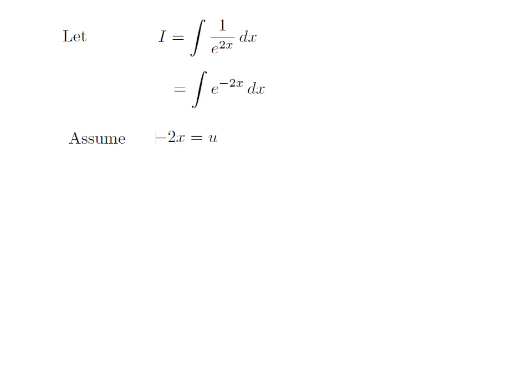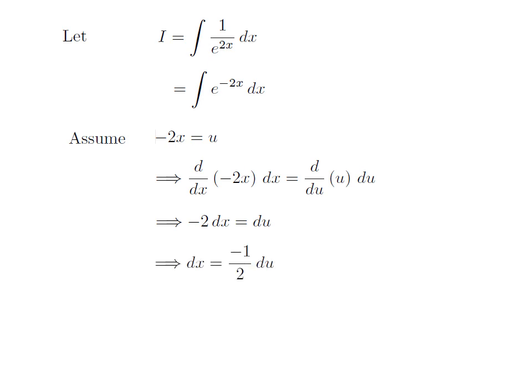To simplify the integration, I have assumed minus 2x is equal to u. Taking the differential of both sides, we get the differentiation of minus 2x with respect to x into dx is equal to the differentiation of u with respect to u into du. Differentiation of minus 2x with respect to x is minus 2, and differentiation of u with respect to u is 1. So, minus 2 dx equals du, which gives dx equals minus 1 upon 2 into du.